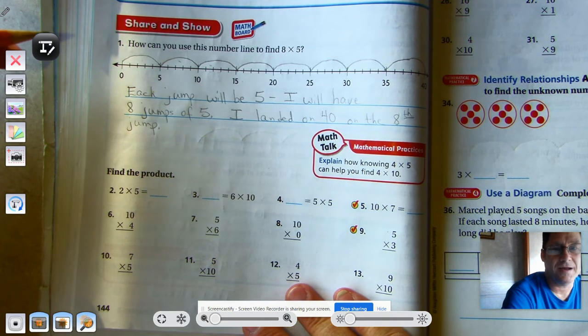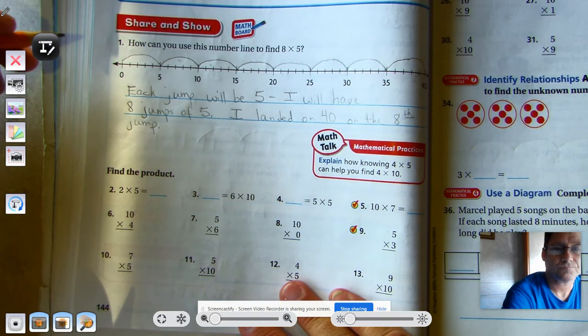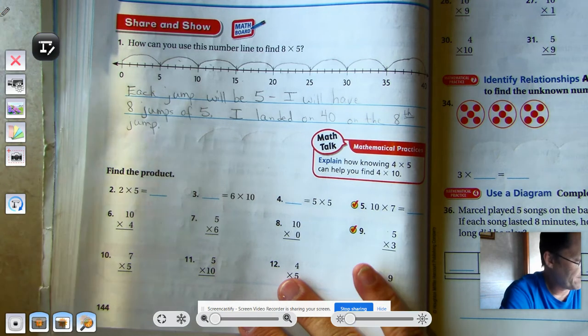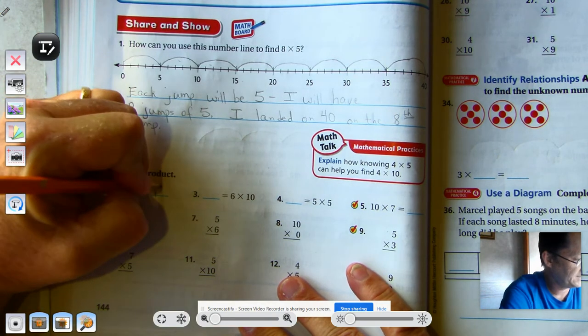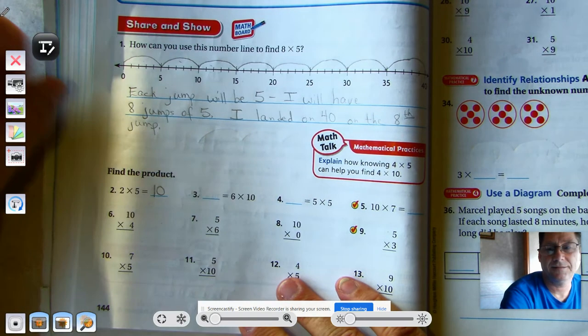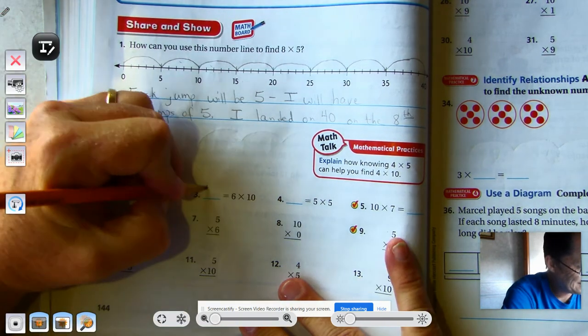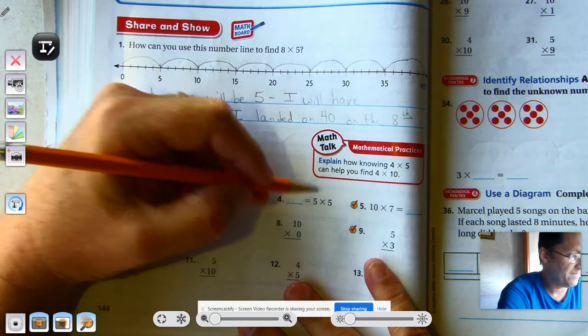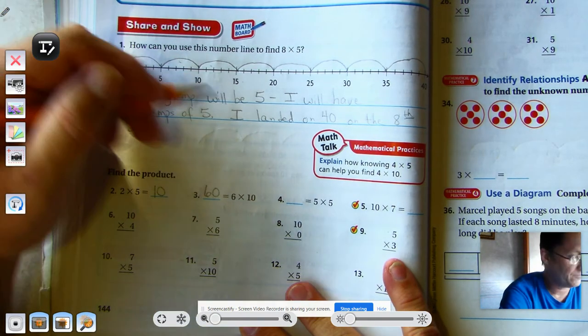All right, so 2 times 5, I have 2 fives, that's 10. 6 tens: 10, 20, 30, 40, 50, 60. 5 fives: 5, 10, 15, 20, 25.